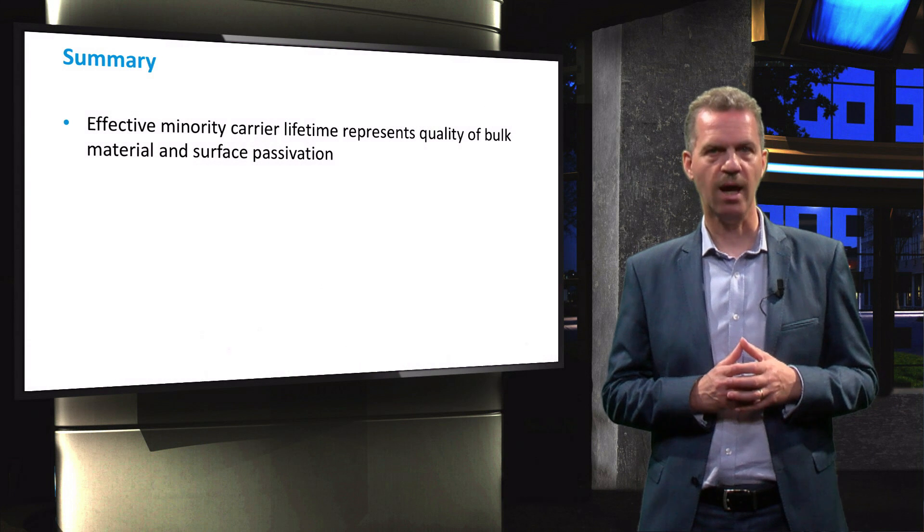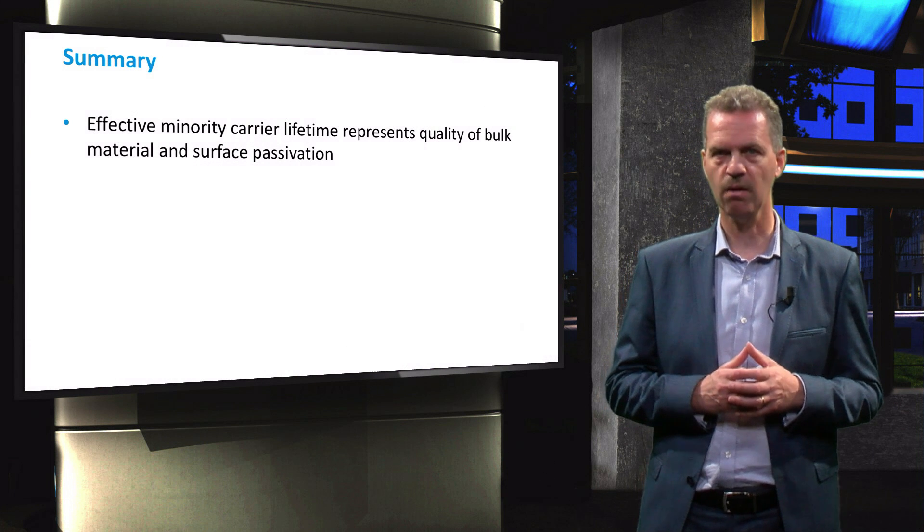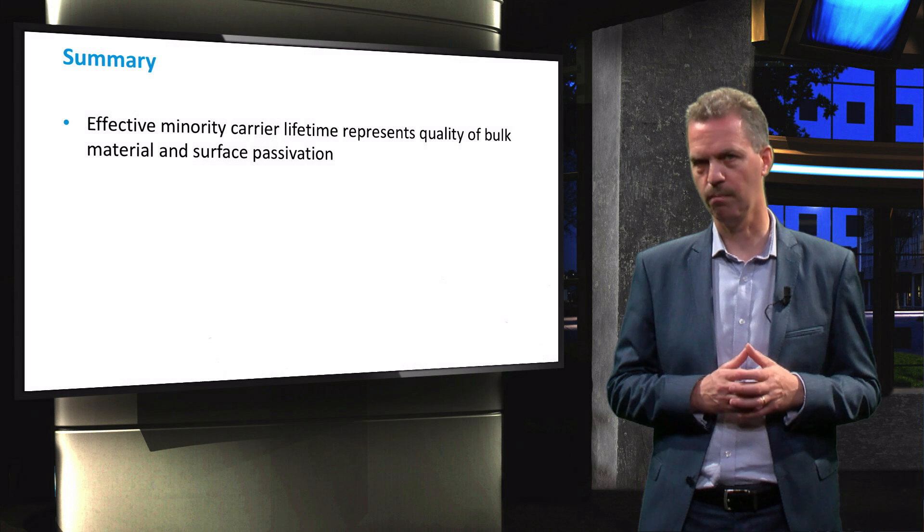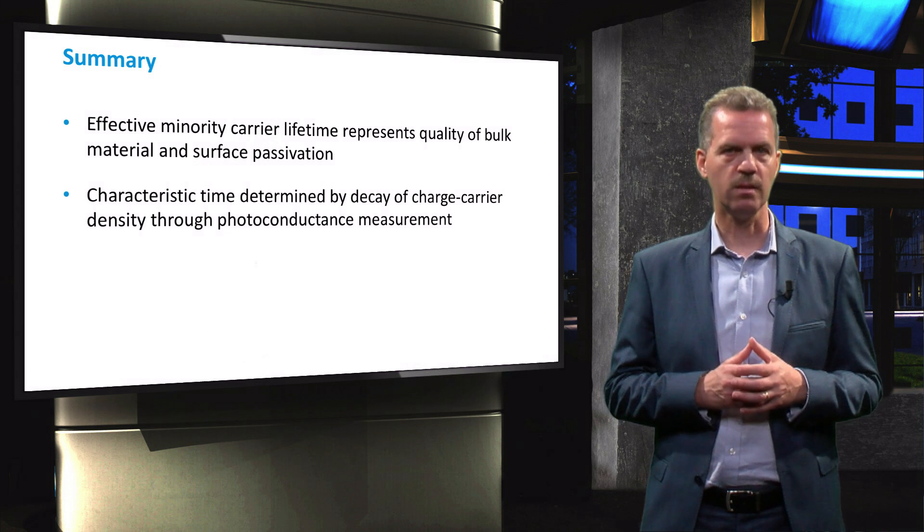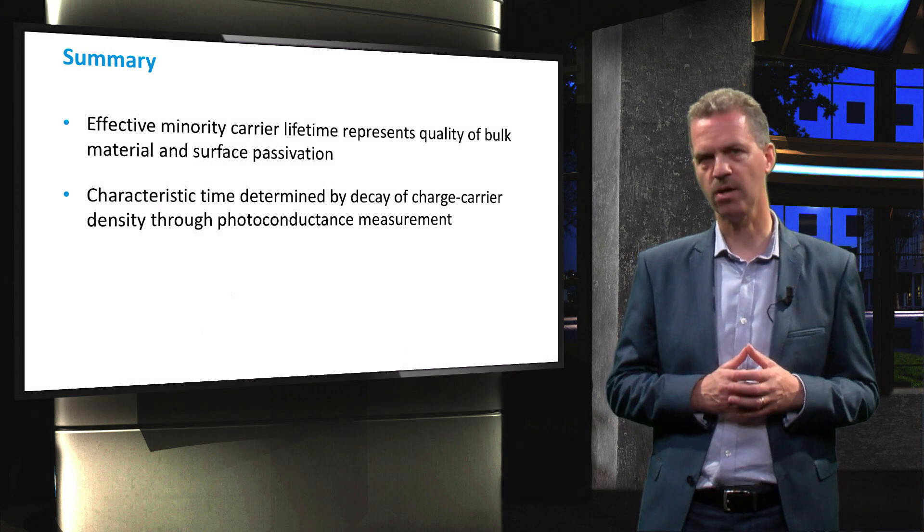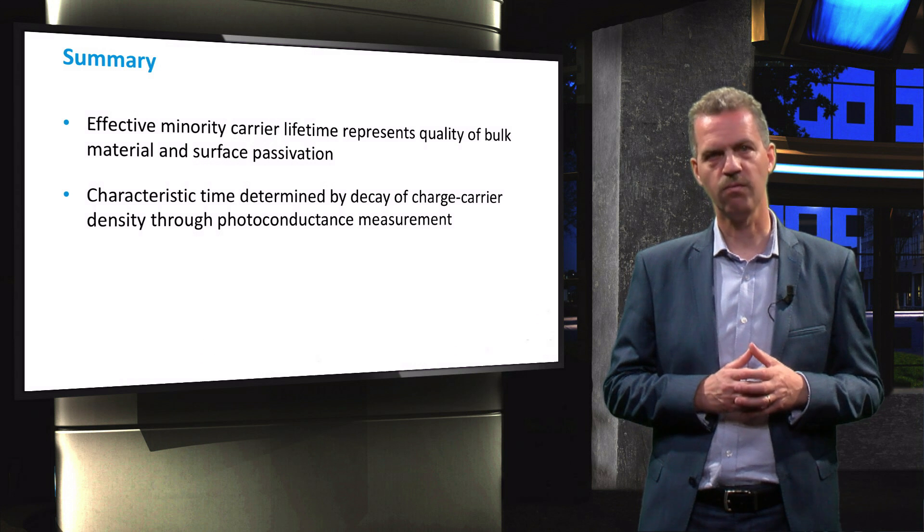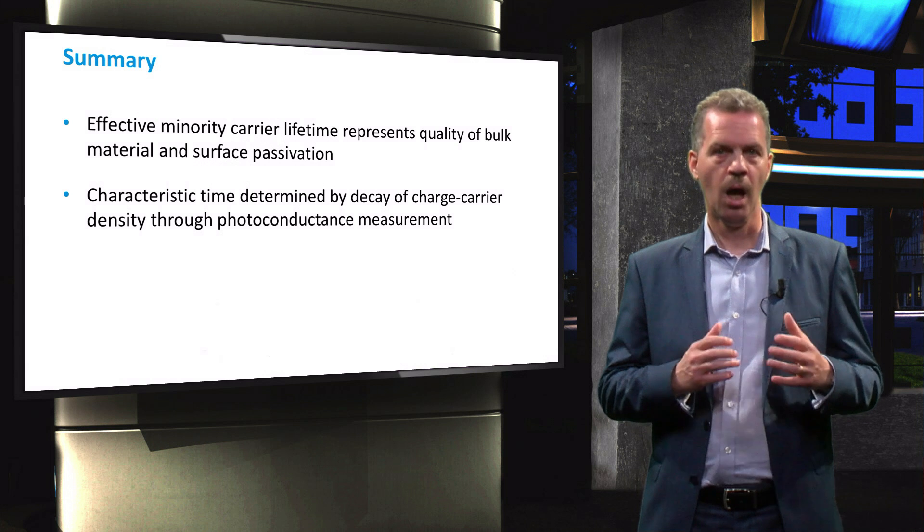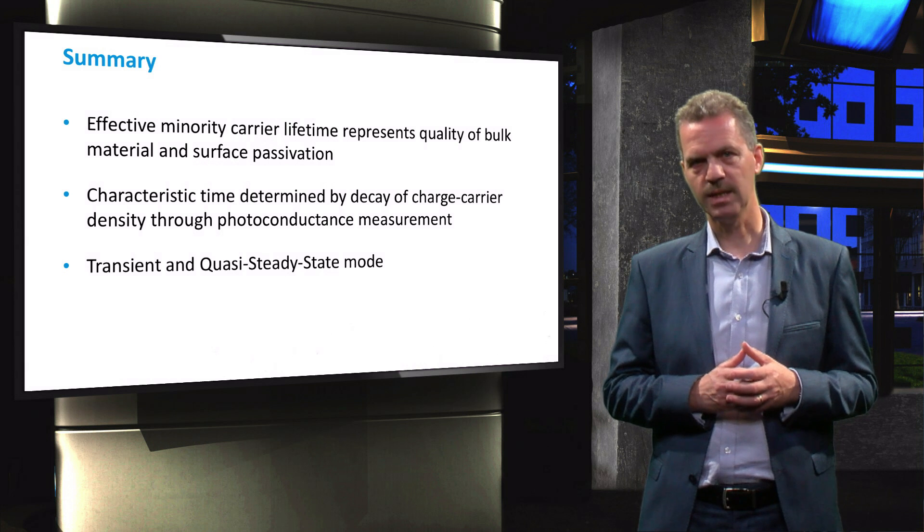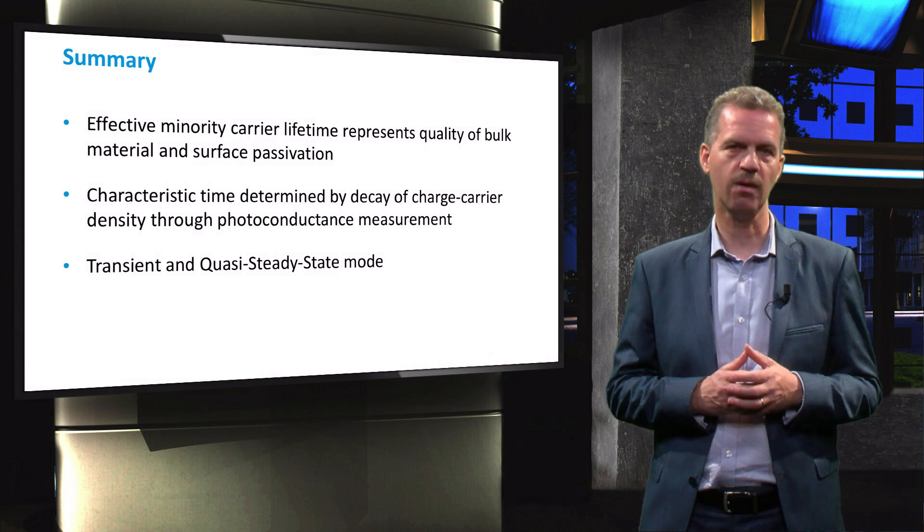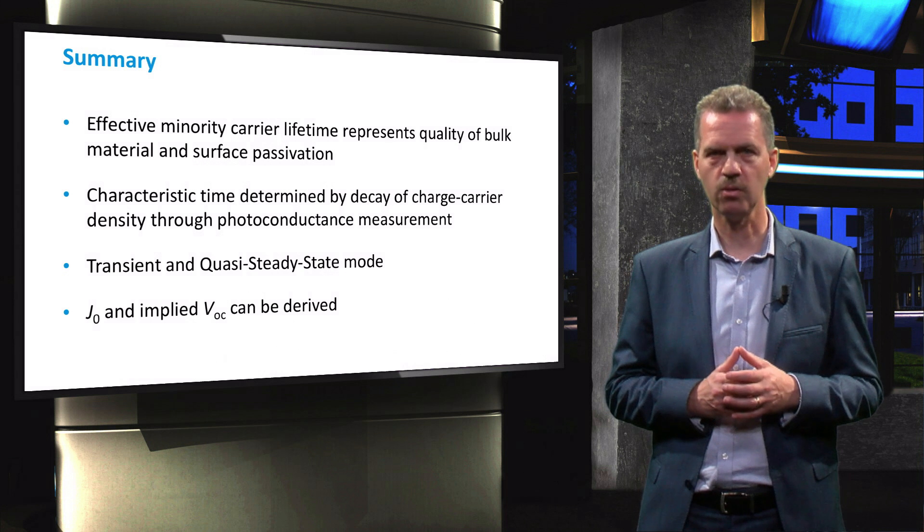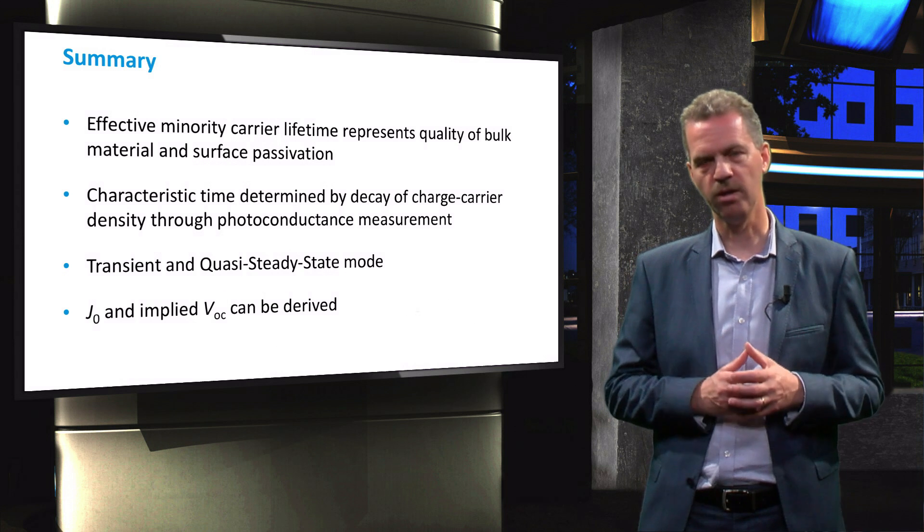In summary, we have discussed how the effective minority carrier lifetime is a measure for the recombination rate, and thereby the quality of bulk material, and how well the surface is passivated. We have demonstrated the methodology of a lifetime measurement, and that it is determined through the decay of the charge carrier density after excitation, which in turn is calculated from a photoconductance measurement. We have shown the difference between the transient and quasi-steady state operating modes, which is selected based on the range of the effective minority carrier lifetime. And finally, we have discussed that from the lifetime measurement, we can derive the saturation current density J0 and the implied VOC.